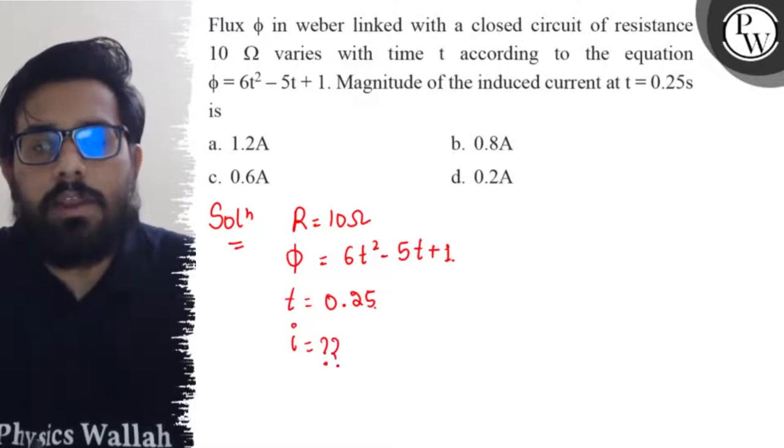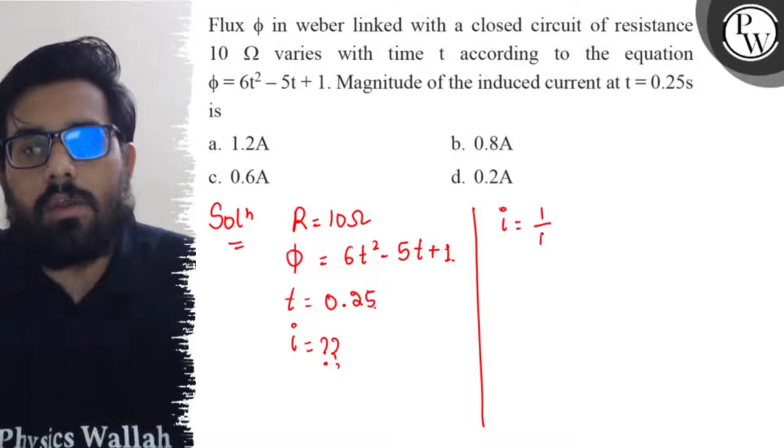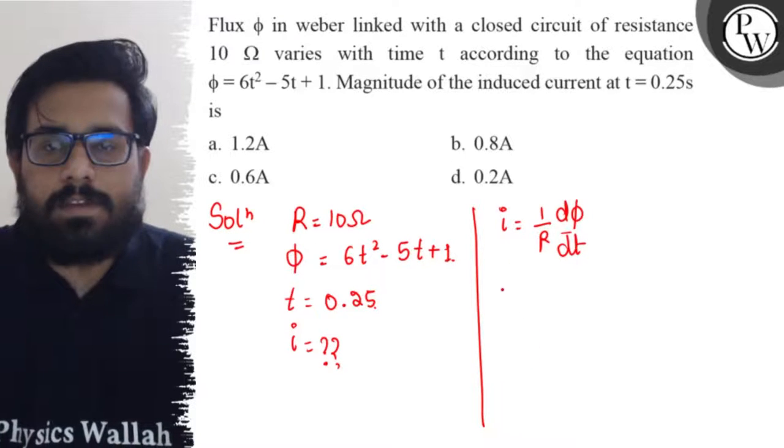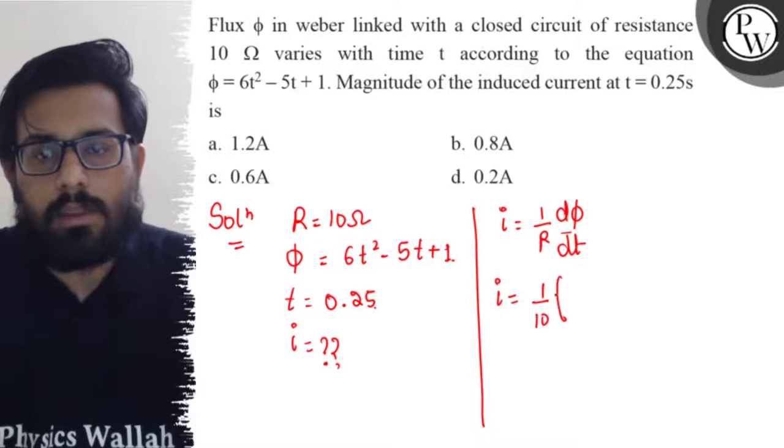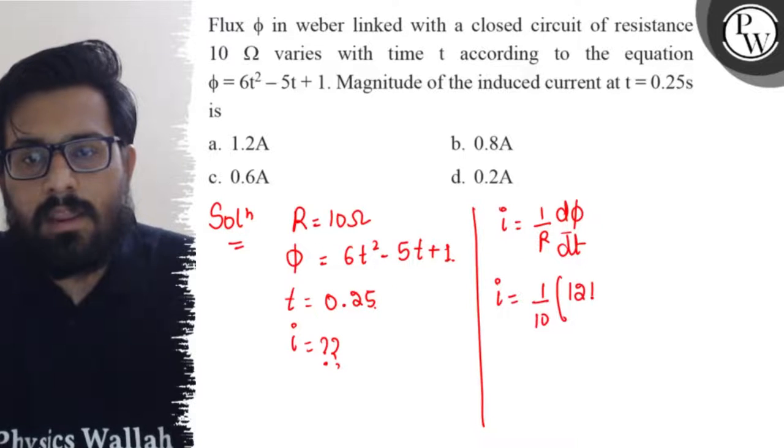So we know that relation i = 1/R × dφ/dt. So just differentiating, 1/10 into differentiating this φ, so we get the value of 12t - 5.